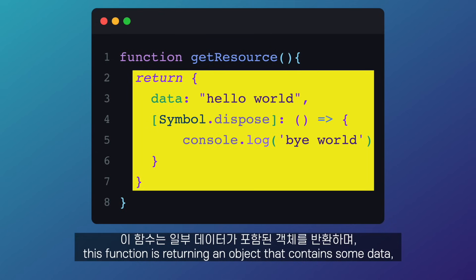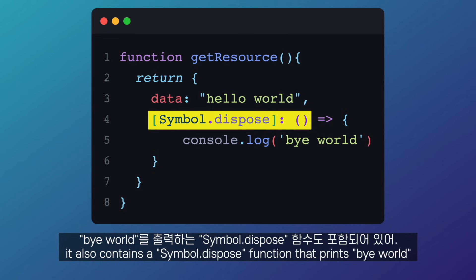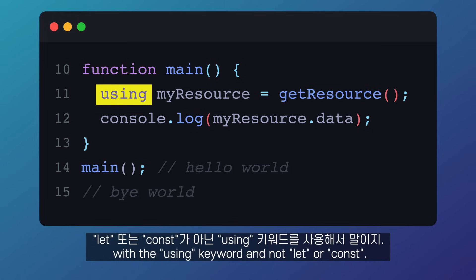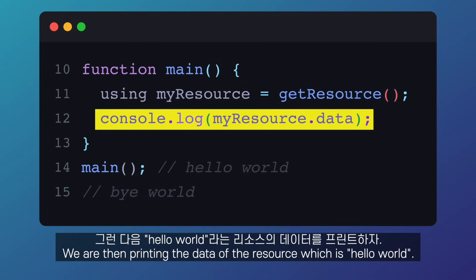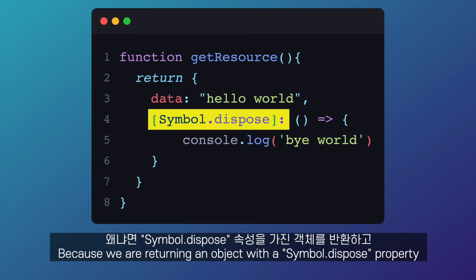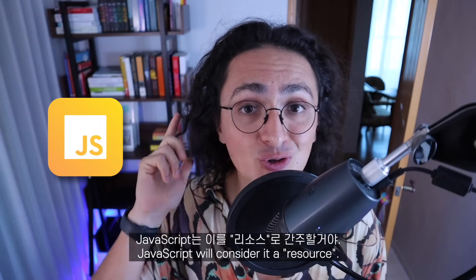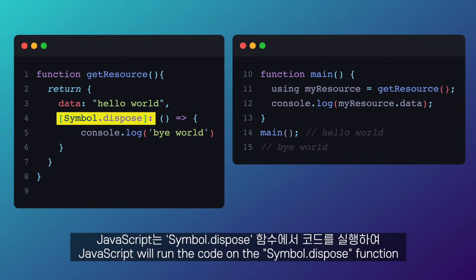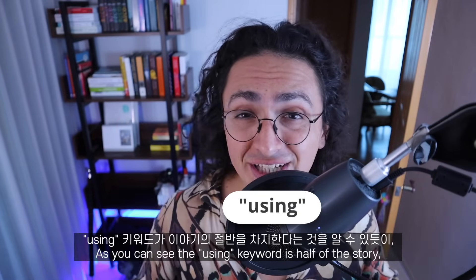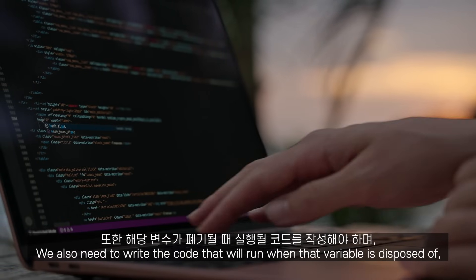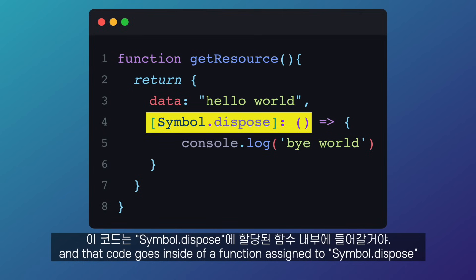Let's first understand how it works. Here we have a `getResource` function that returns an object containing some data, and it also contains a `Symbol.dispose` function that prints "bye world". In our `main` function, we create a `myResource` variable with the `using` keyword instead of `let` or `const`. We then print the data of the resource, which is "hello world". Because we are returning an object with a `Symbol.dispose` property and we are using the `using` keyword, JavaScript will consider it a resource. Automatically, once the `main` function finishes and `myResource` is out of scope, JavaScript will run the code in the `Symbol.dispose` function. The `using` keyword is only half of the story — we also need to write the code that will run when the variable is disposed, and that code goes inside a function assigned to `Symbol.dispose`.